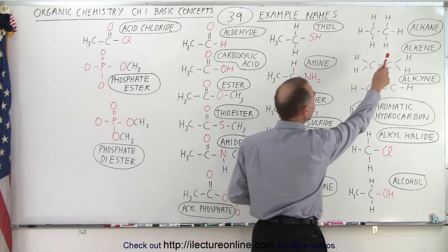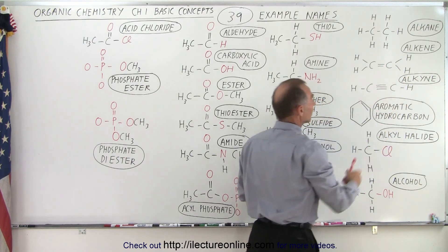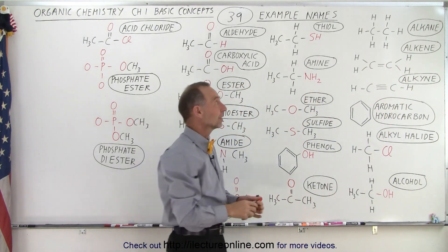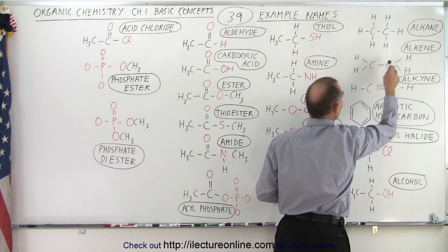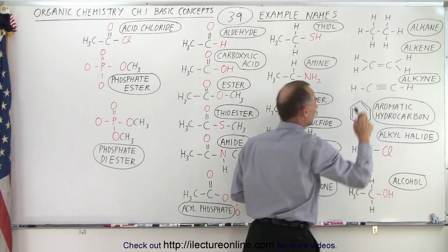Starting with alkane, alkene, and alkyne, by now we should realize that when we have ane we have a single bond, ene we have a double bond, yne we have a triple bond.